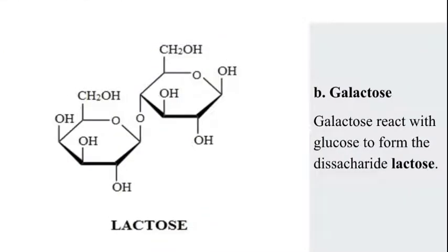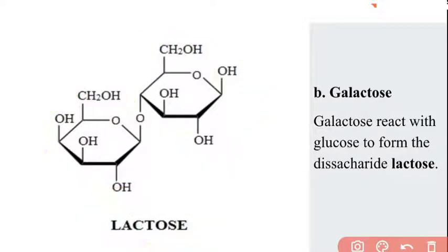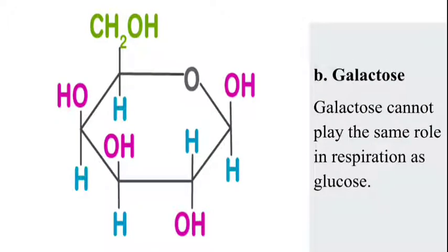Galactose reacts with glucose to form the disaccharide lactose. When two monosaccharides combine, they form a disaccharide, so galactose is important in forming the lactose molecule. However, glucose and galactose cannot be easily converted into one another — even though they differ only in their alpha/beta forms, interconversion is not straightforward. Galactose cannot play the same role in respiration as glucose does; while glucose helps produce 38 ATPs, galactose does not participate in cellular respiration reactions.